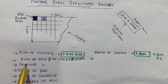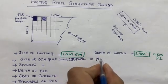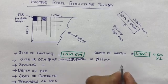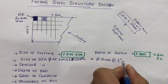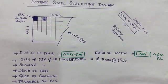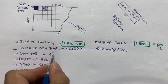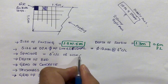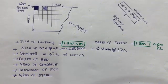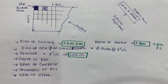Next, the size or diameter of the longitudinal bar: use 12 millimeter bars with a spacing of 6 inches center to center, which you can also express as 0.15 meter center to center, or 15 centimeter — which equals 6 inches.